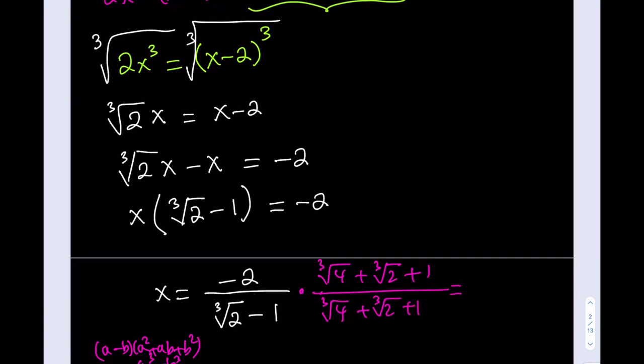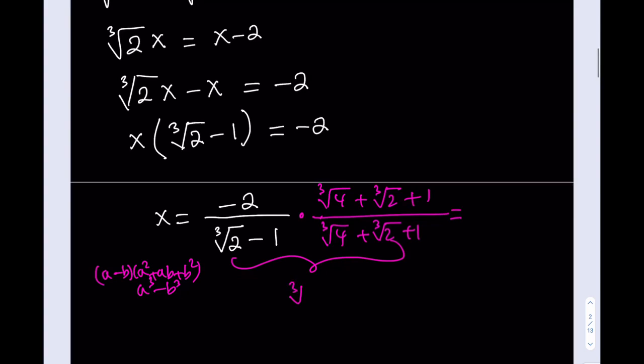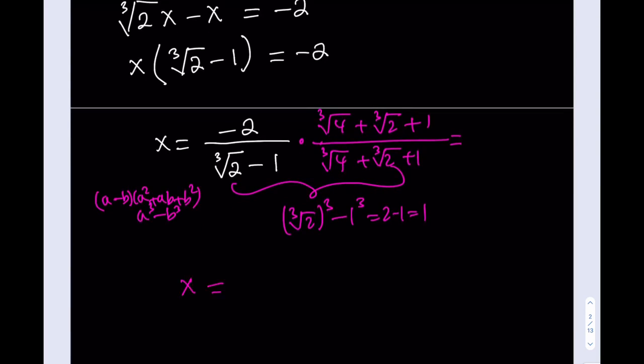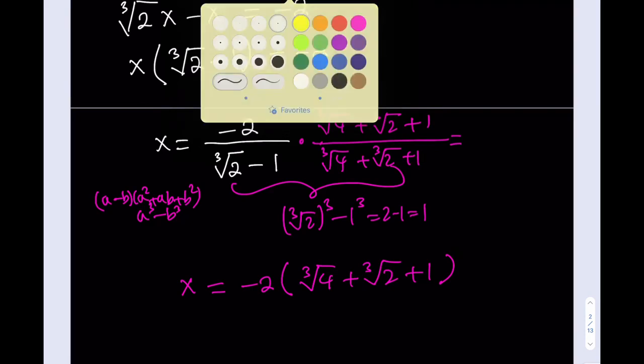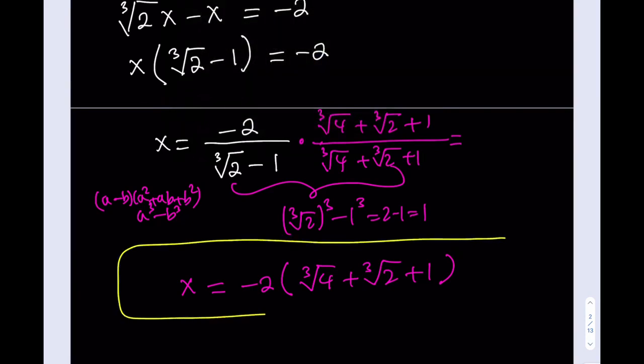1 divided by cube root of 4 plus cube root of 2 plus 1. And when I multiply these, I'll be getting the beautiful expression. And remember that I told you that when you multiply these together, you're going to get cube root of 2³ - 1³, which is equal to 2 - 1, and that's equal to 1. So I don't have to worry about the denominator anymore. So the answer is going to be then, what? It's going to be negative 2 times the quantity cube root of 4 + cube root of 2 + 1. So that's going to be the solution to my equation, which was given as a cubic.